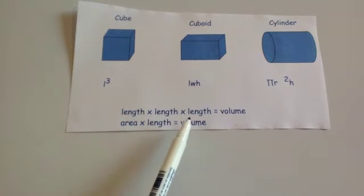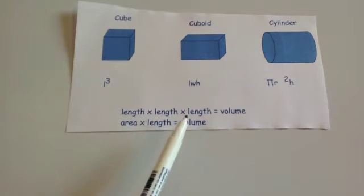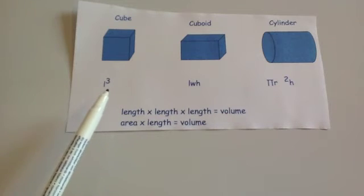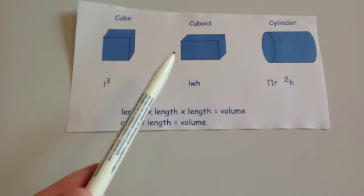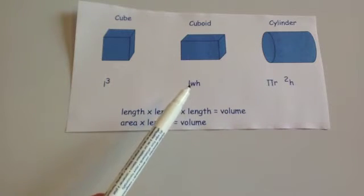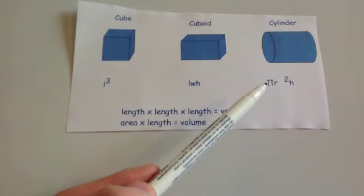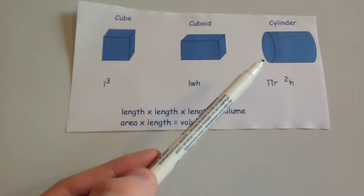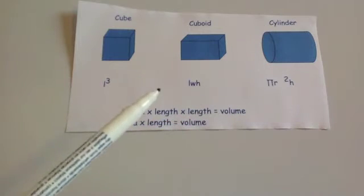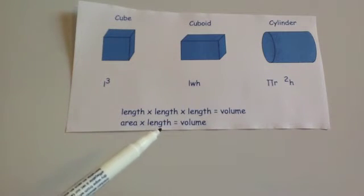If you multiply length by length by length, you get a volume, because a length times a length is an area, and an area times a length is a volume. Looking at a cube, you do length times length times length, which gives the volume. The volume of a cuboid is length times width times height — all lengths — so that's a volume. The volume of a cylinder: pi r squared is the area of the face, times by the height, which is a length, giving a volume. So a length times a length times a length equals a volume, and an area times a length also equals a volume.